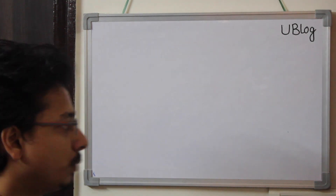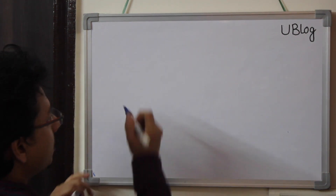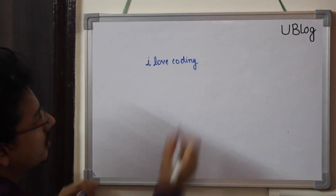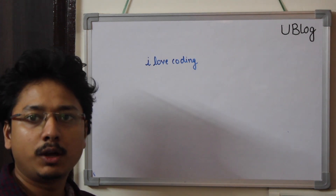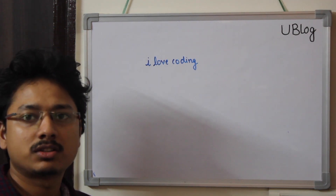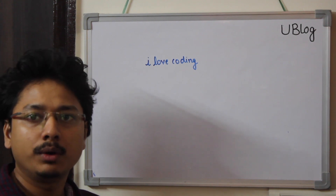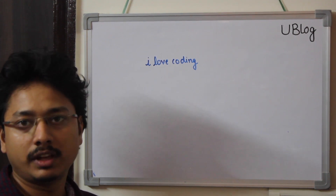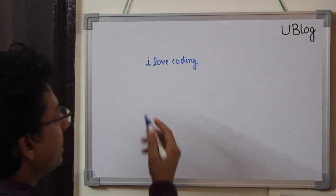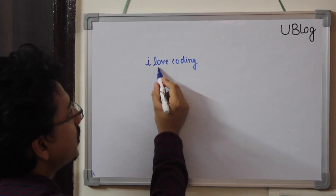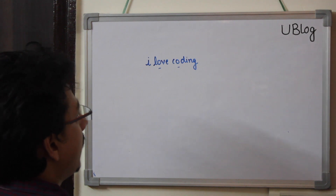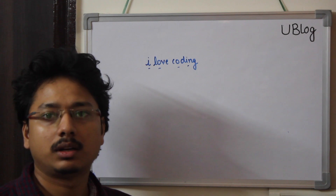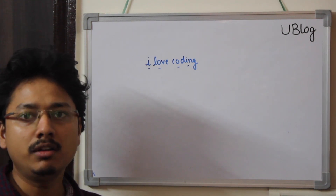Let's take an example. I am given the string 'I love coding'. I need to find if this string contains unique characters or not — return true if it contains only unique characters with no duplicates, and return false if there is any duplicate character. As you can see, this string does contain duplicate characters: O is repeating and I is also repeating. So we need to return false in this case.